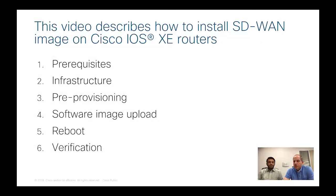We will start with basic questions: what do I need? I have an ISR 4K in my lab and I want to upgrade it to an IOS XE image which supports SD-WAN. We will talk about whether it is the same image as before with additional features added, or if it's something else. That's one important question upfront.